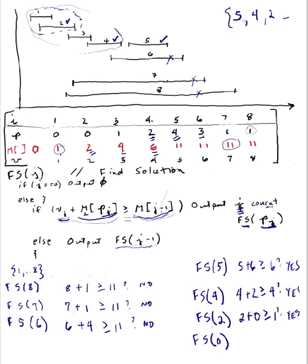So our set is 5, 4, and 2, and that has a weight of 5 plus 4, which is 9, plus 2, equals 11. That's my weight. So that's how you do the traceback to find the elements of the set which form our optimal solution to the weighted interval scheduling problem.